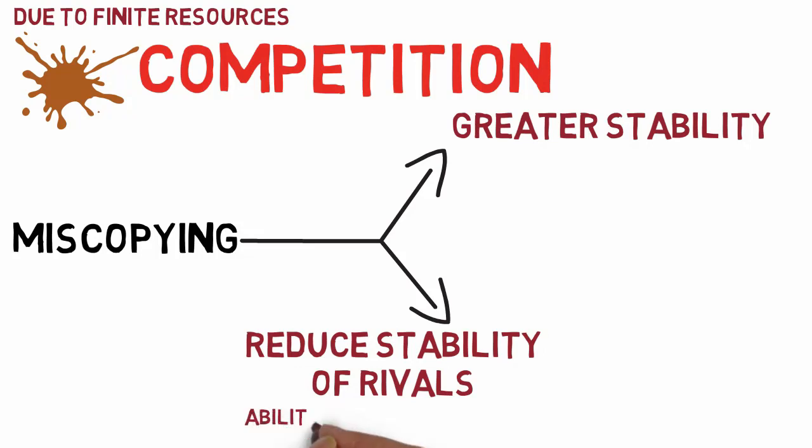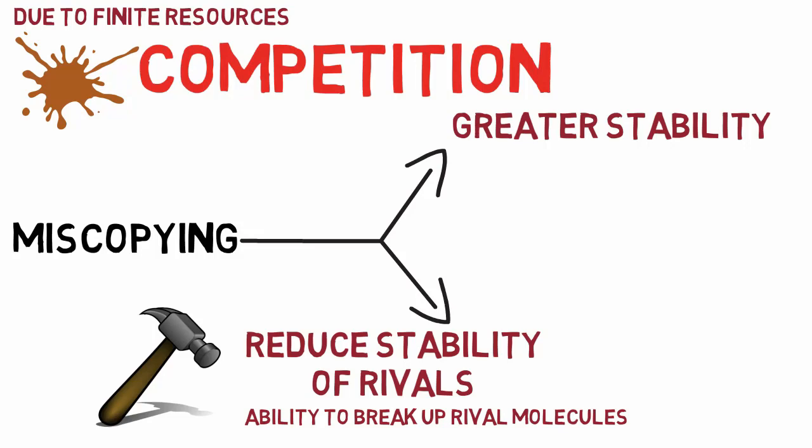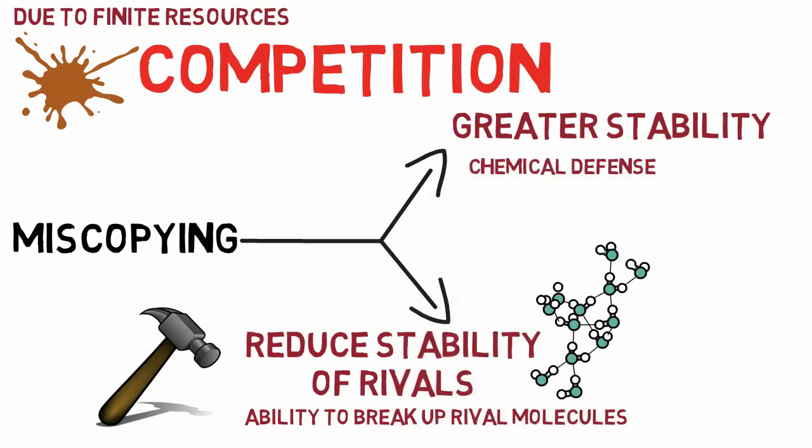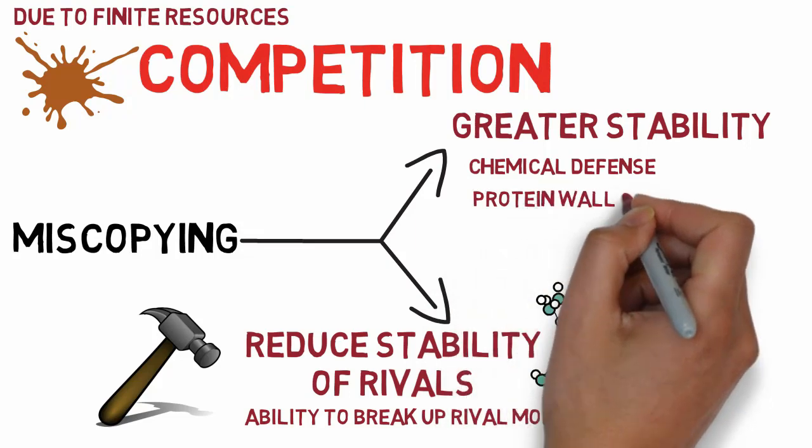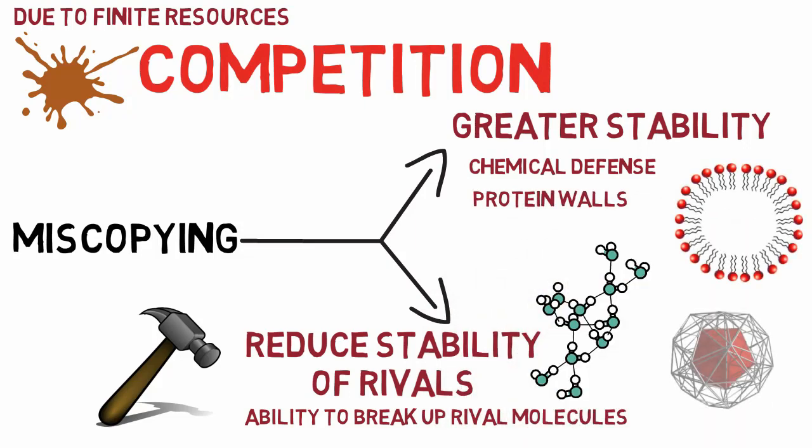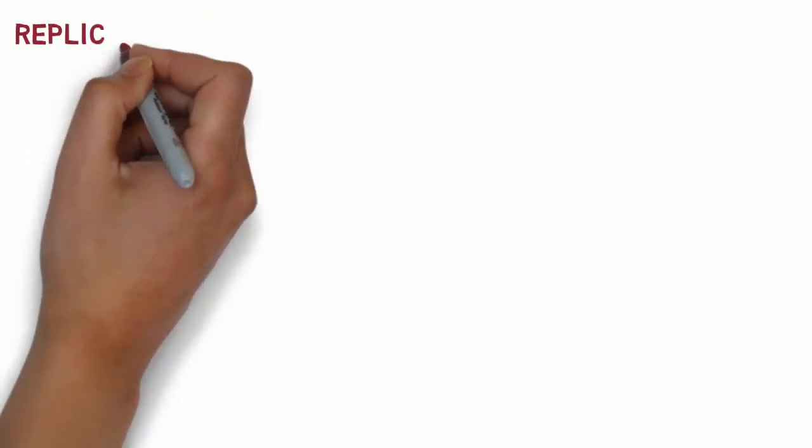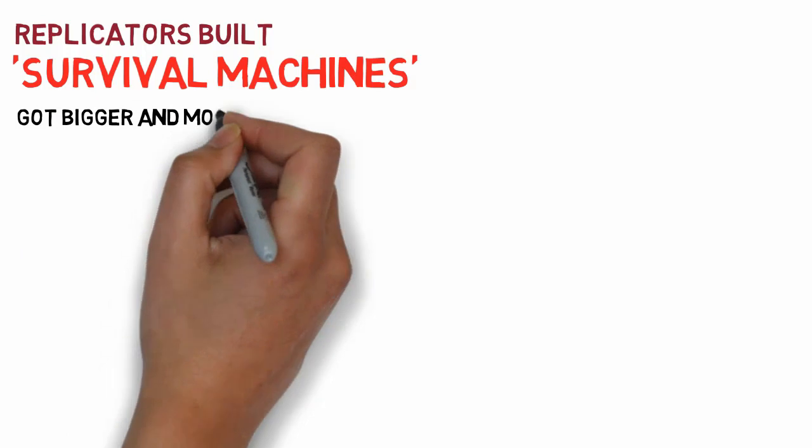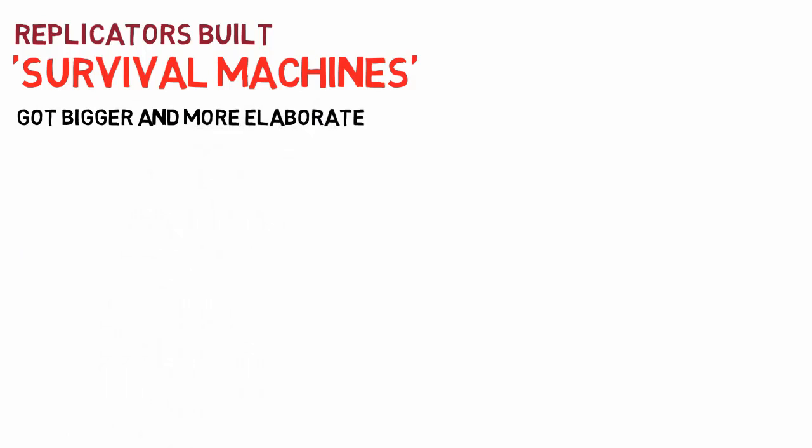For example, the ability to break up rival molecules would allow a molecule to obtain food and remove competing rivals. Other replicators found ways to protect themselves chemically or by building protective coats of physical protein walls around themselves. This may be how the first living cell was formed. Replicators that survived built survival machines for themselves to live in, which got bigger and more elaborate. The process was cumulative and progressive.